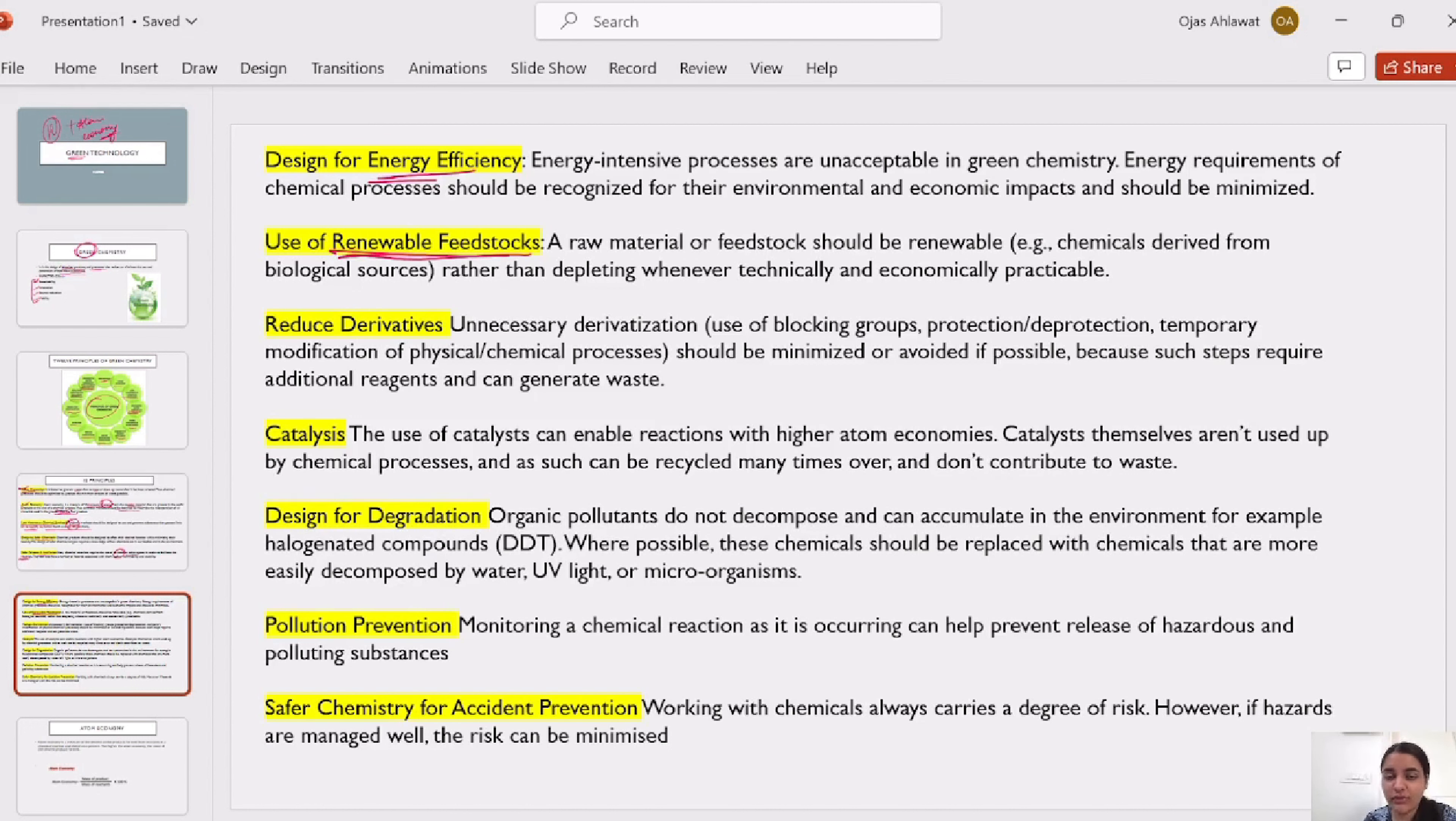Because we have all heard the lines: our country has enough for everyone's needs, but not for anyone's greed. So greed is not in the country, so you have to use the sources of greed. Reduced derivatives, unnecessary, unnecessary production of waste, unnecessary production of processes which are not necessary, minimize or avoid. Because additional reagents are produced, and in additional reagents, waste is generated.